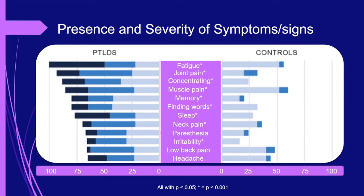As you scan down this list, you see the 9 symptoms where the differences between the patients and controls were most impressive. Moderate to severe distal paresthesias were quite common in the patient group, and this goes along with the exam finding of decreased vibratory sensation.